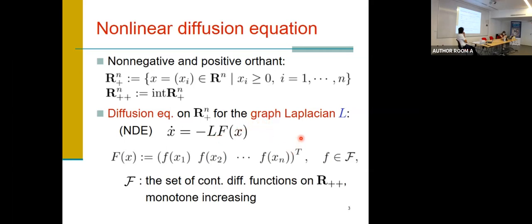I will explain later. And F is mapping from R-n to R-n, diagonal mapping. So each function F is identical in the class of calligraphic F. Calligraphic F is a set of continuous-driven functions and monotone increasing.